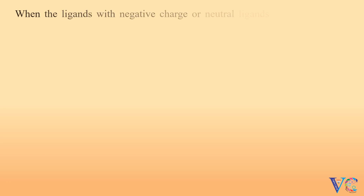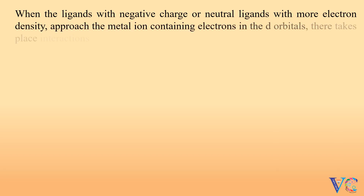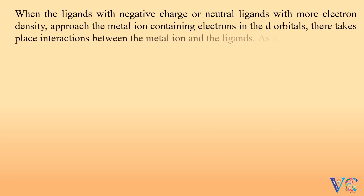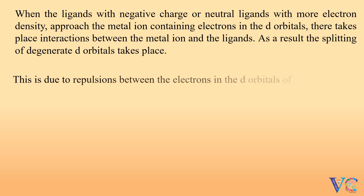When the ligands with negative charge, or neutral ligands with more electron density, approach the metal ion containing electrons in the d orbitals, there takes place interactions between the metal ion and the ligands. As a result, the splitting of degenerate d orbitals takes place. This is due to the repulsions between the electrons in the d orbitals of the metal and the electrons in the ligands.